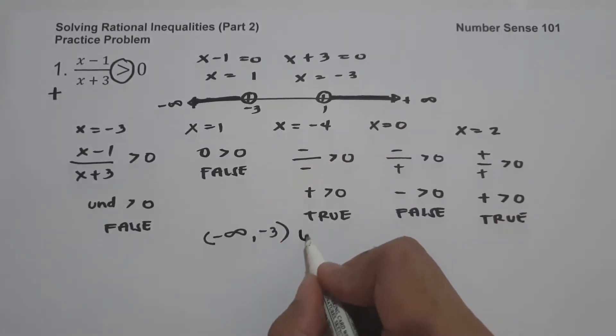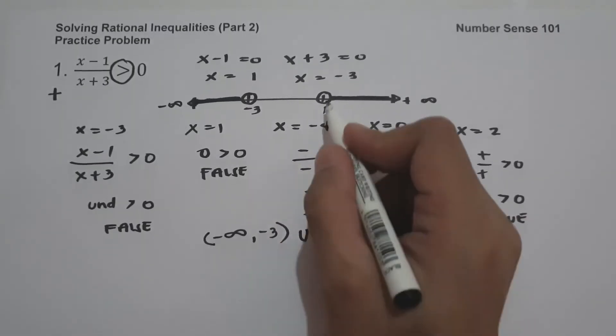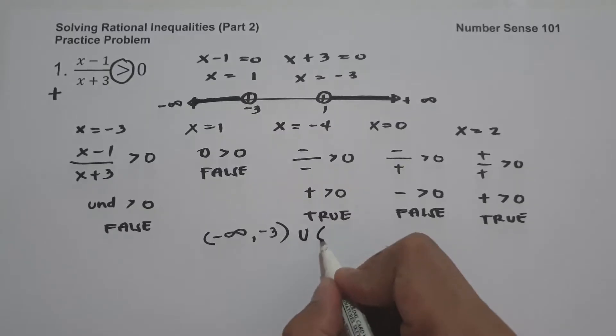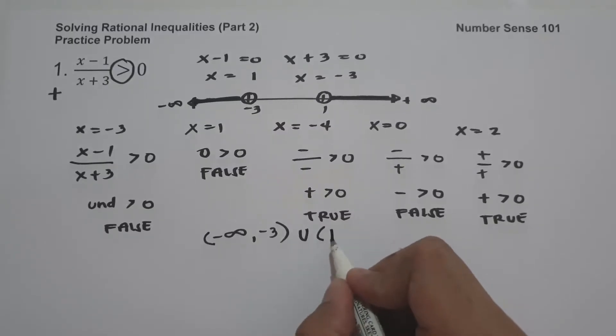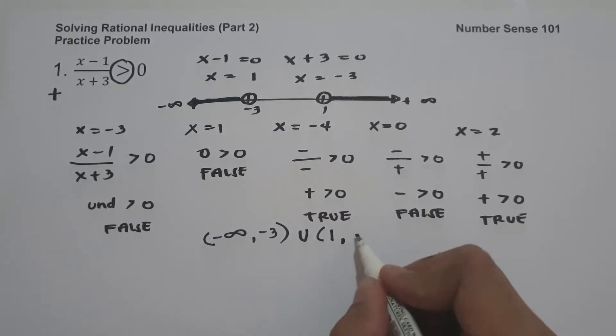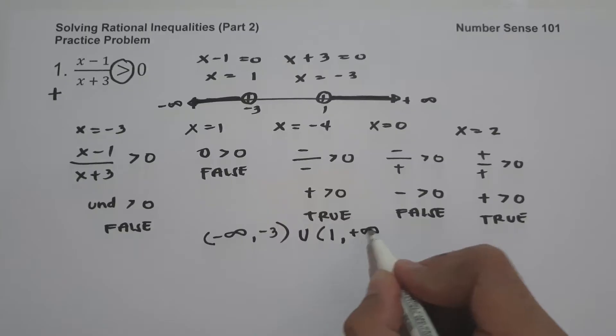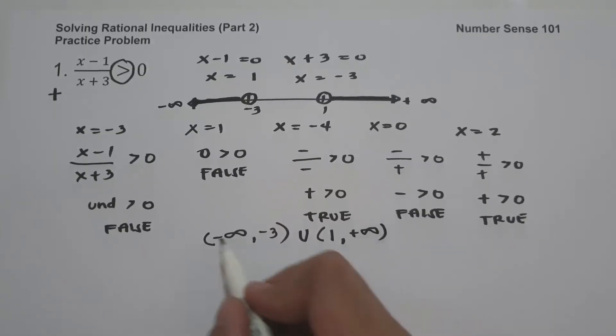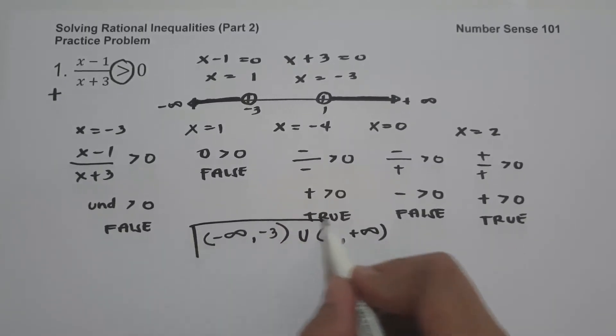And then union, then 1 — since 1 is not included, I use a parenthesis — comma, up to positive infinity. And this will be our answer: (−∞, −3) ∪ (1, +∞).